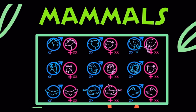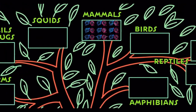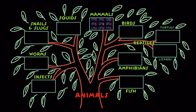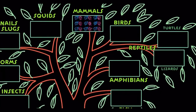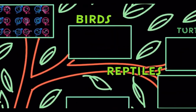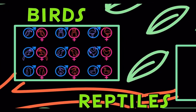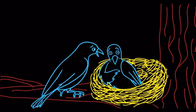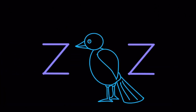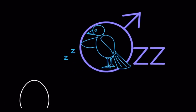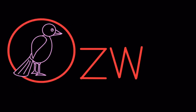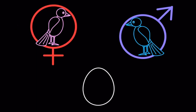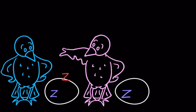Throughout the tree of life, other systems have worked just as well for other animals. Birds and some reptiles have genetic sex determination but their sex is determined by mom rather than dad. In those groups, a pair of Z chromosomes produces a male, while one Z and one W chromosome together produces a female. In this ZW system, the chance of male or female is still 50-50, depending on whether mom puts a Z or a W into her egg.